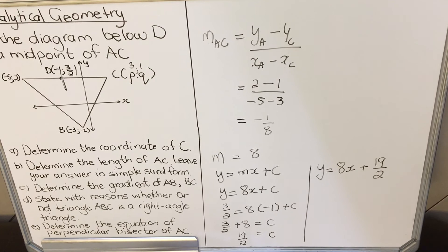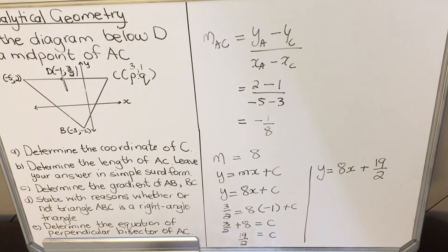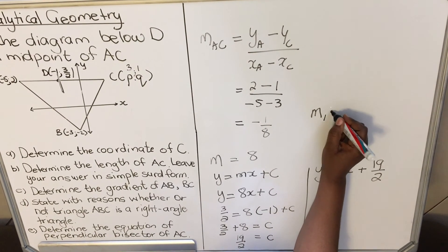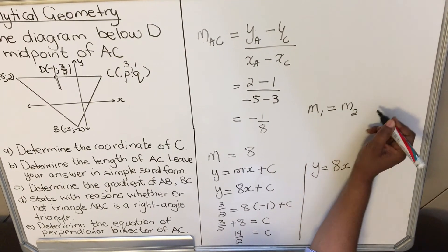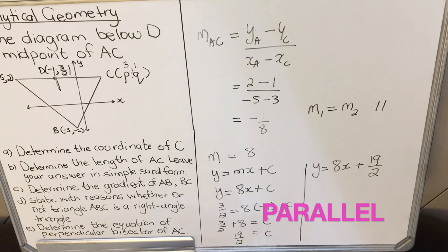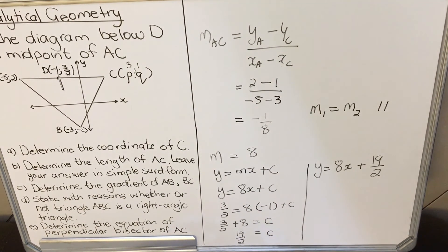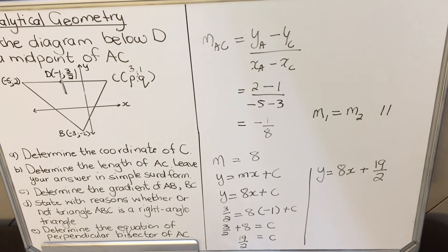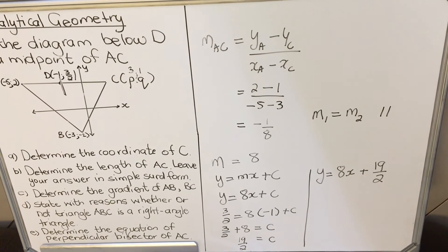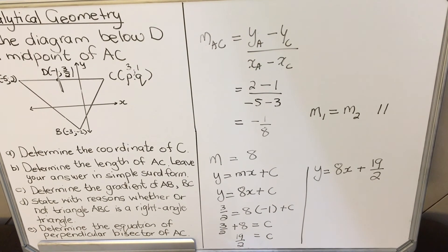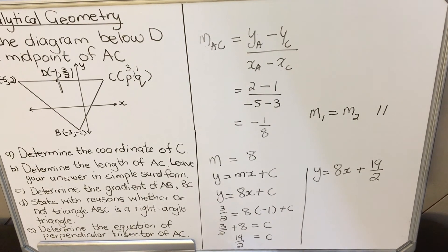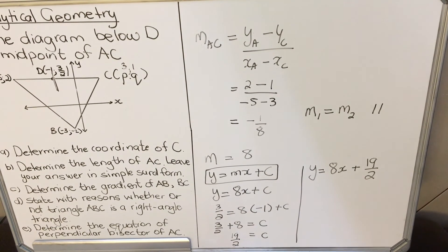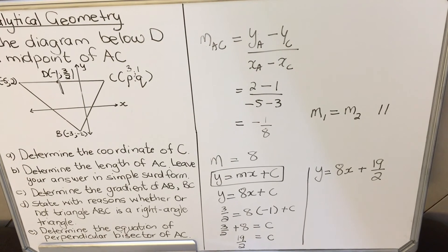One more thing: when two lines are parallel, their gradients are equal — gradient 1 equals gradient 2. You need to memorize these formulas because in grade 10 we are not given a formula sheet. Remember: the midpoint formula has a plus, while the distance and gradient formulas have a minus. Also memorize the straight-line formula. Thank you for watching — if you haven't subscribed, please do.